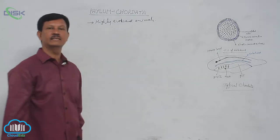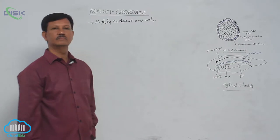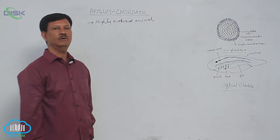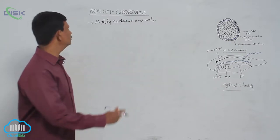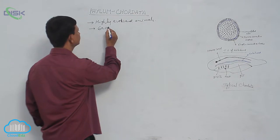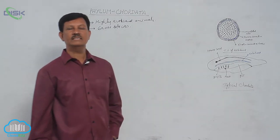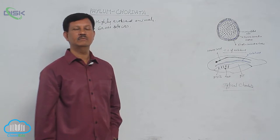In the animal kingdom, these are highly evolved and this is the last phylum. Animals are divided into many phyla. The primitive phyla is protozoa, and highly evolved animals are included in phylum Chordata. It includes nearly 60,000 species identified so far. This is also the largest phylum in the animal kingdom.